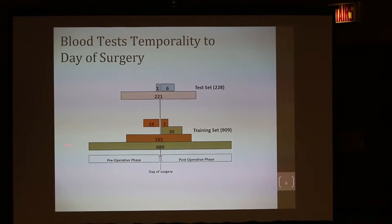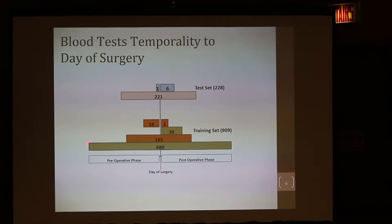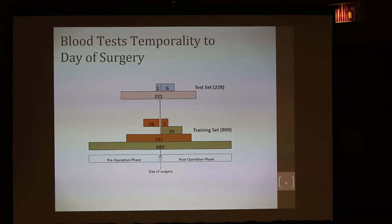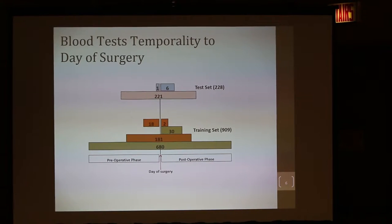The only central pillar holding the data together was the temporality — the time factor. Otherwise, you can see small bell curves distributed for each of the patients at different intervals with all kinds of different tests. There were more than 811 tests and more than 55,000 blood test results. So there was no fitting of the data or distribution we could apply other than the temporality.